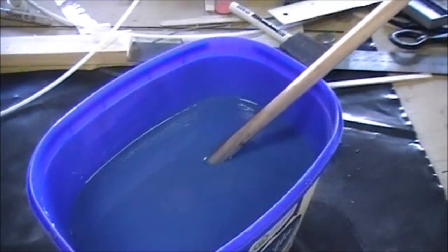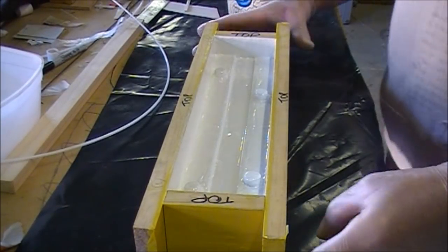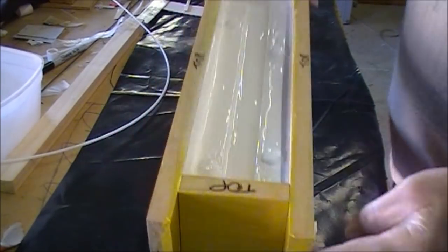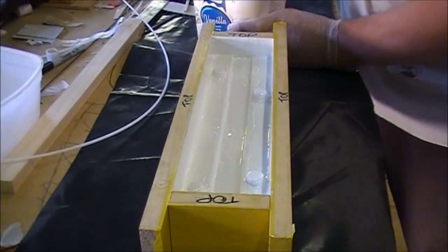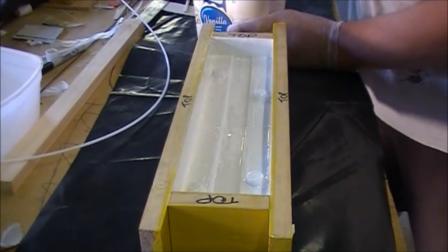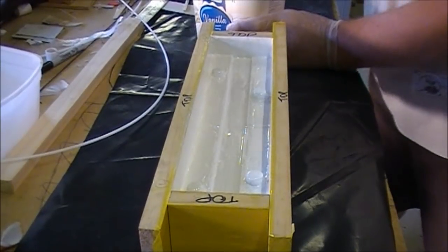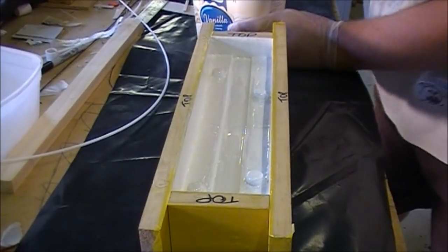So here's the mold, ready to go. It's Corian, a good mix. Now my calculation is I need about 1170ml to fill this mold.